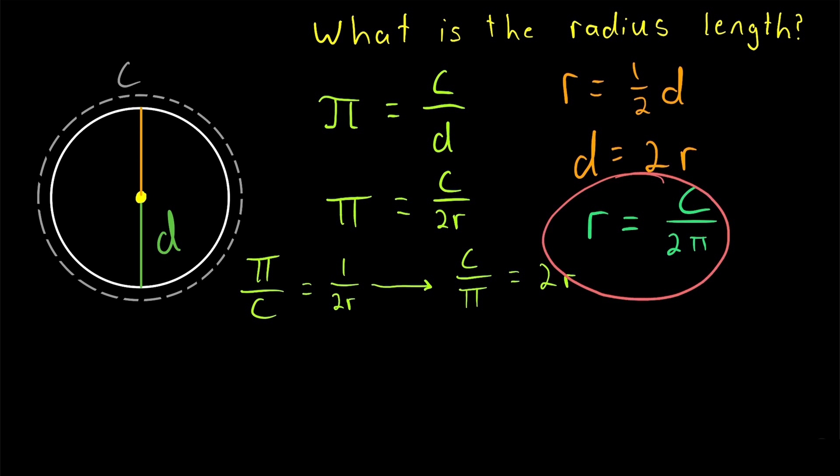So let's try out the formula we just figured out. Suppose we're given that the circumference of this circle is equal to 10 pi centimeters. Then using this formula, we know that the radius length of the circle R must be equal to the circumference, which is 10 pi centimeters divided by 2 pi. Of course, those pi's will cancel out and 10 divided by 2 is 5. So the radius length of the circle is 5 centimeters.